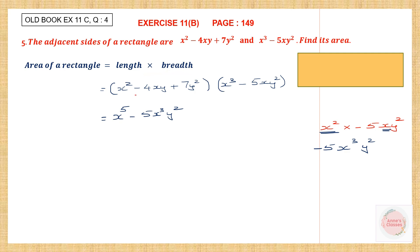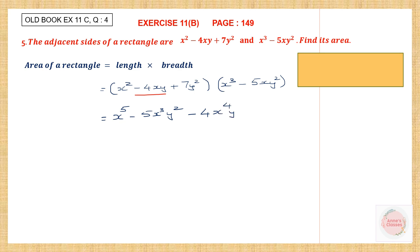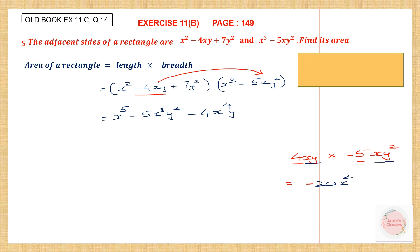Now let's go on to the next term, minus 4xy, into the first term here. The sign is minus, the number is 4, x into x cubed is x to the power of 4, and we have a y, giving minus 4x to the power of 4 y. Now multiply minus 4xy with minus 5xy squared: the sign is minus, 4 fives are 20, x and x is x squared, y and y squared is y cubed. So that is minus 20x squared y cubed.